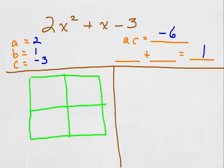And the factors that I automatically think of are 3 and negative 2. 3 and negative 2 multiply to a product of negative 6 and add to a sum of 1.